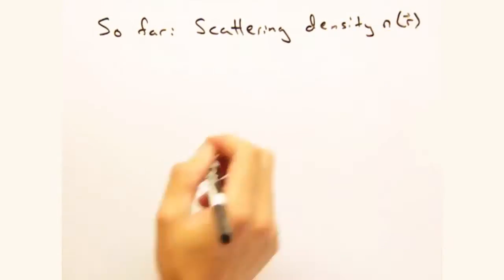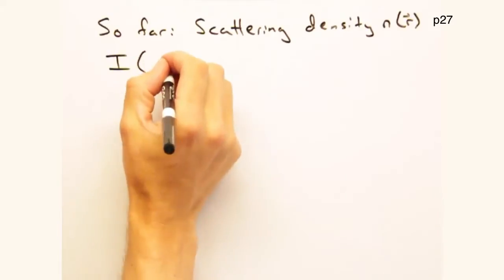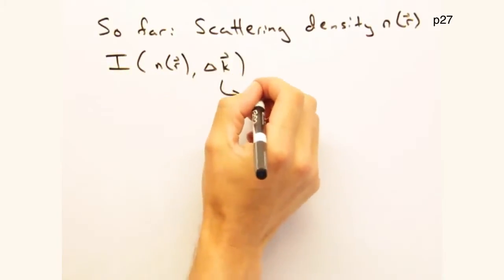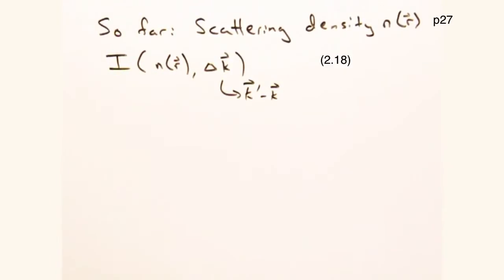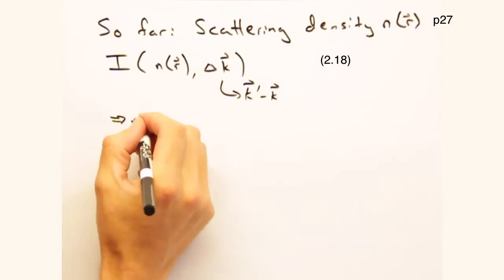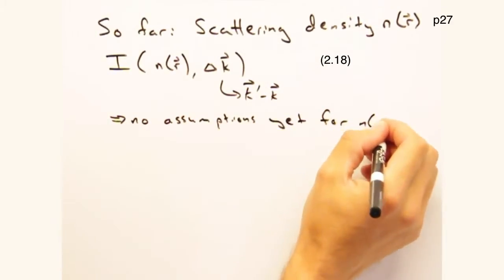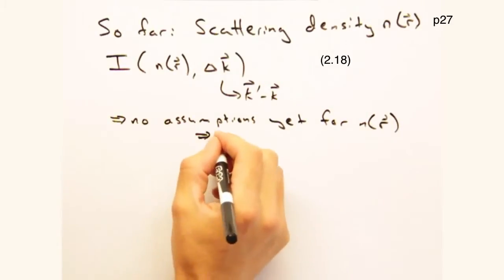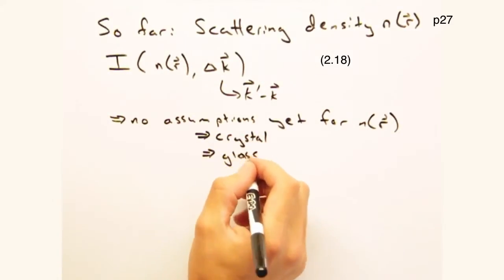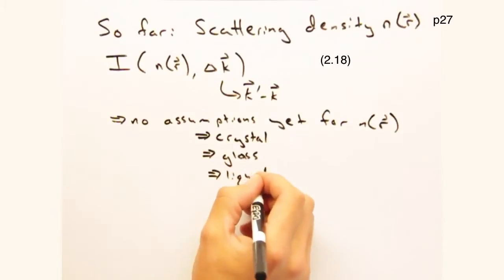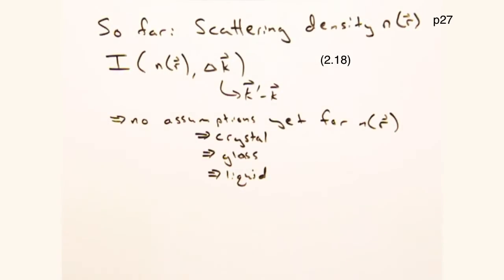Last time we looked at elastic diffraction and developed an expression for the intensity at our detector that depended on n of r and the change in our wave vector k. And in that process, remember, we made no assumptions about the form of n of r. We could have stuck in a crystal, glass, even a liquid into our diffractometer, and this expression for intensity would still hold.